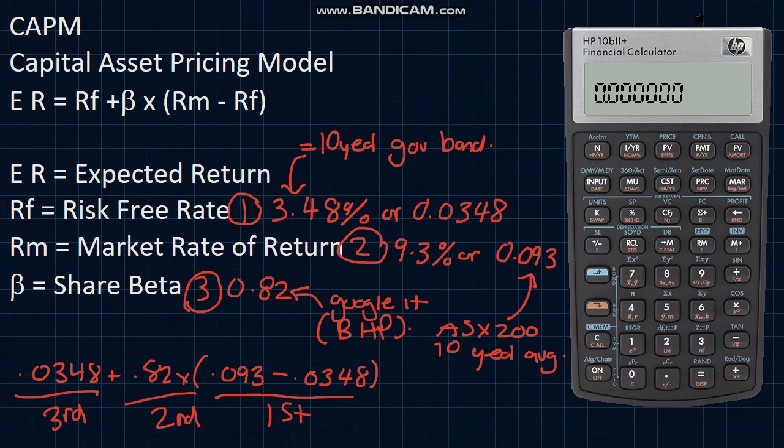Now we're just going to use the simple math function, starting with the clear, and inputting the market return rate minus the risk-free rate. And we're going to multiply that by the beta, and then we're going to add the risk-free rate to give us 0.0825, or round it up to 8.3%.